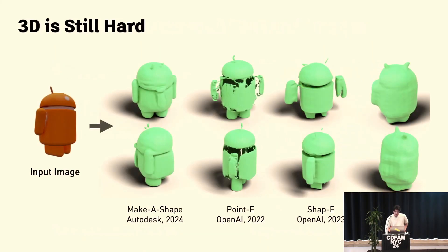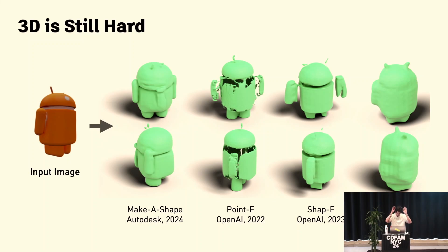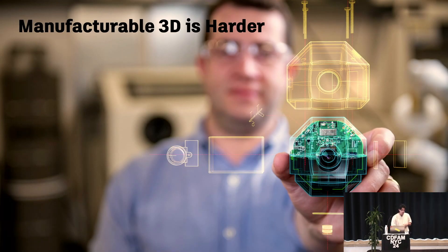What we really haven't seen yet is that happening in 3D, because that data doesn't exist and 3D is still hard. This is an example of a paper our lab put out called MakerShape — the canonical problem of going from a flat image to a 3D shape. Some of the results are not quite sashimi grade — we're hallucinating a necktie on an Android, and the antennae are floating away. What's even more challenging is that manufacturable 3D is even harder, because we're dealing with precise surfaces, things that need to fit together, and tolerances.